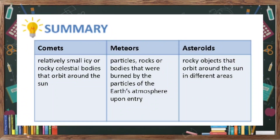In summary: comets are relatively small icy or rocky celestial bodies that orbit around the Sun; meteors are particles or rocky bodies that are burned by the particles of the Earth's atmosphere upon entry; and asteroids are rocky objects that orbit around the Sun in different areas.